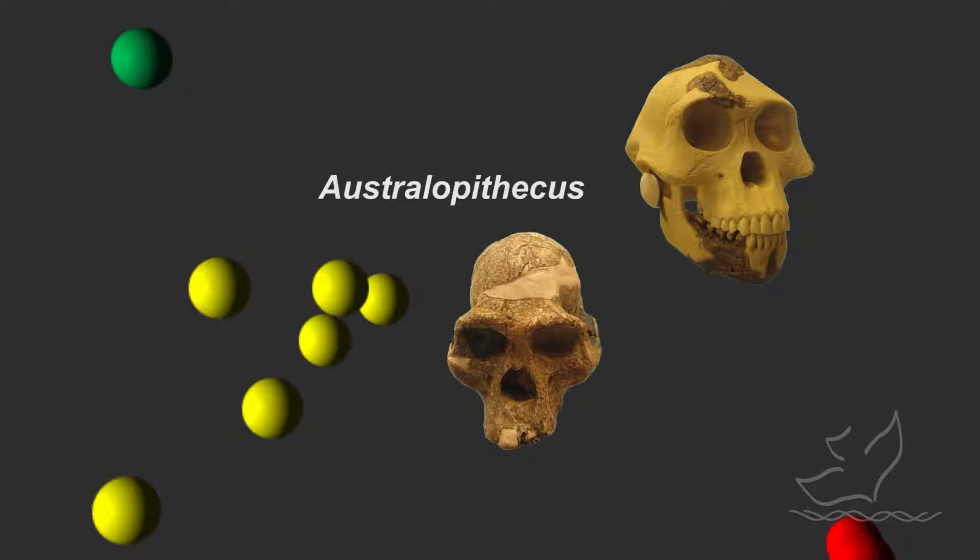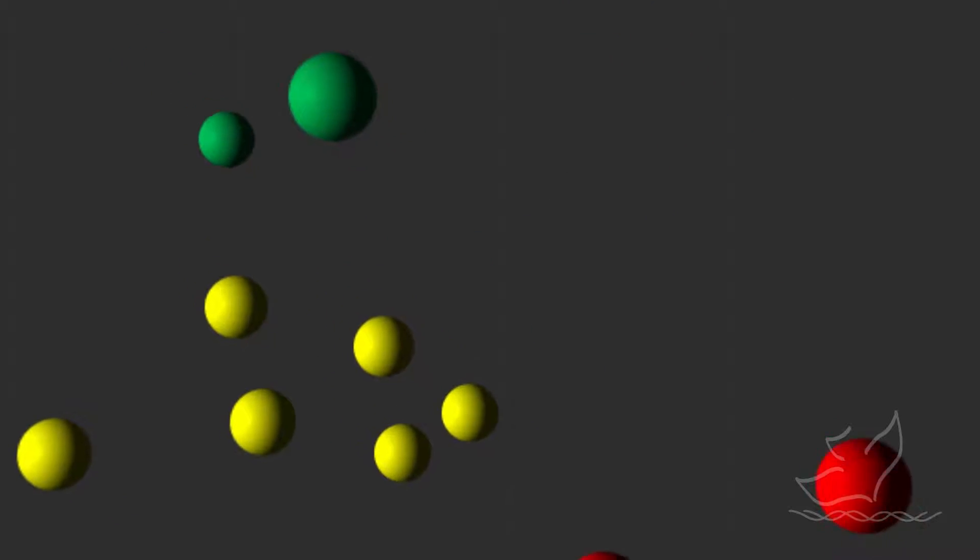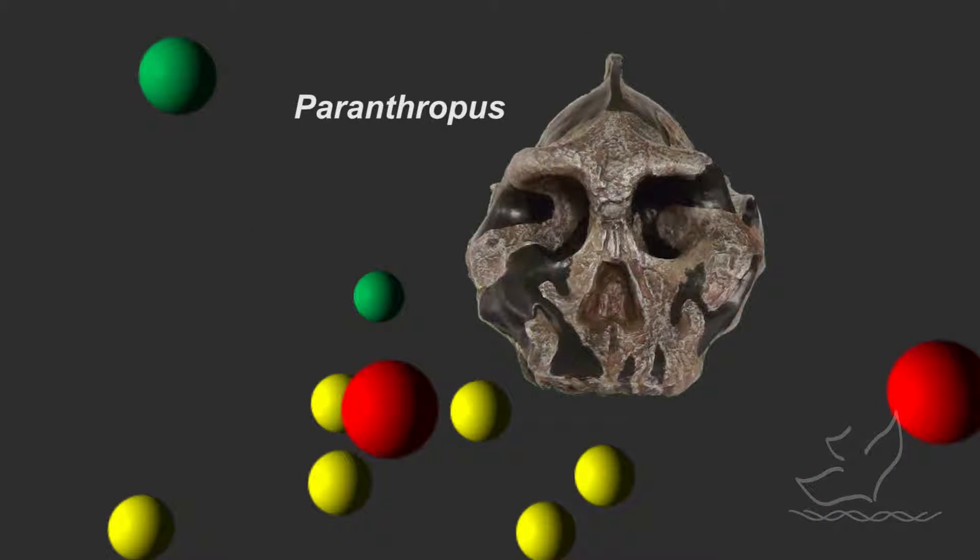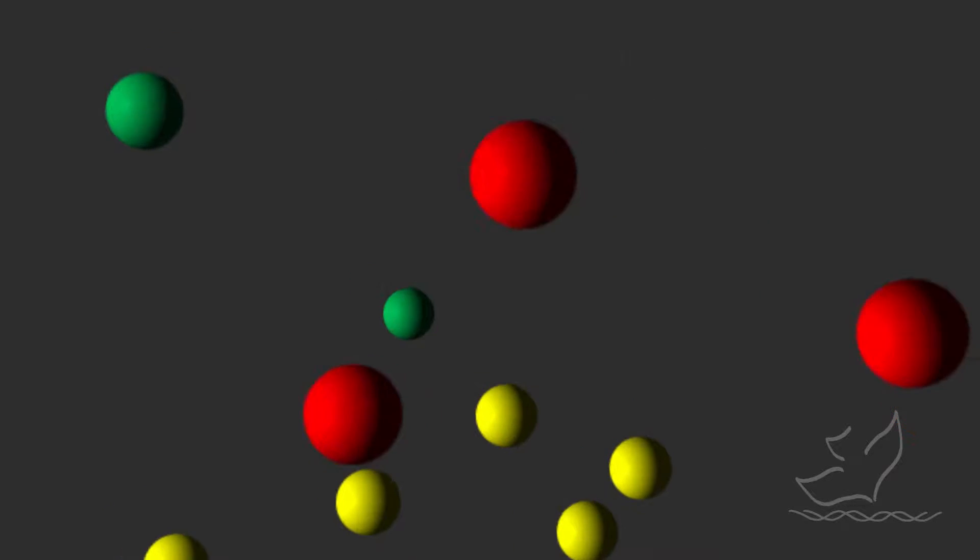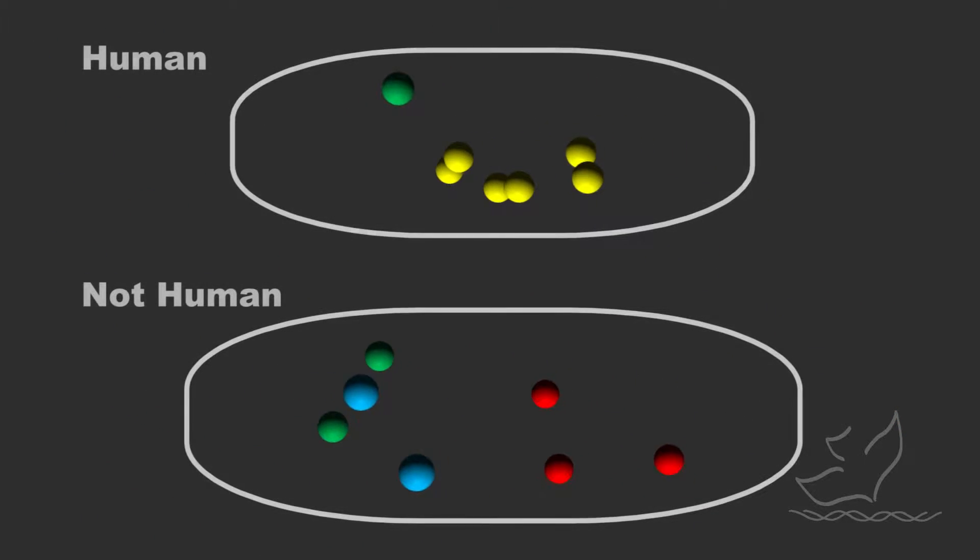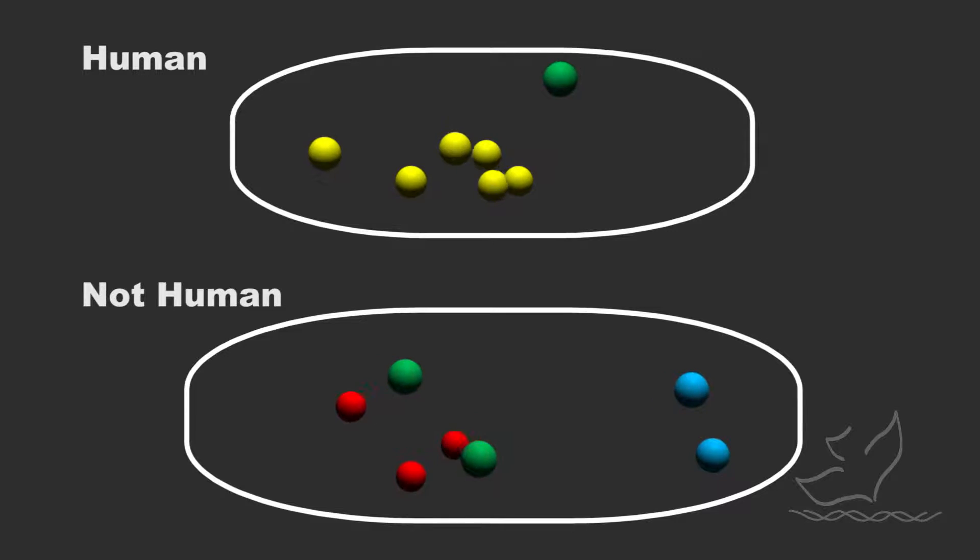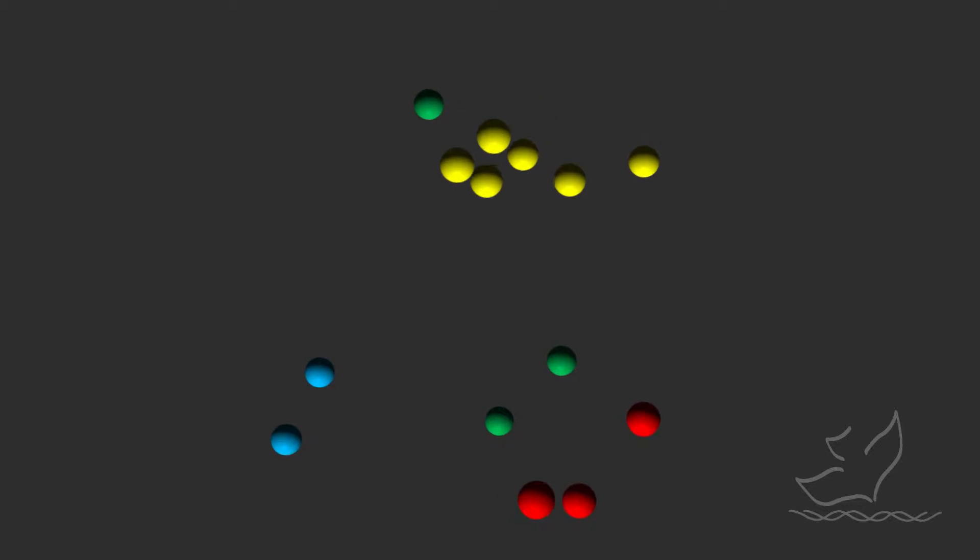There's a cluster of things that are human and then there's a cluster of things that are not human, and there's a difference between them, and it's detectable. Just like creationists have always said, there's a difference - you can tell the difference between human and animal even with all of these fossils.